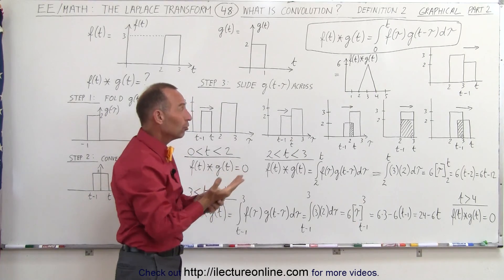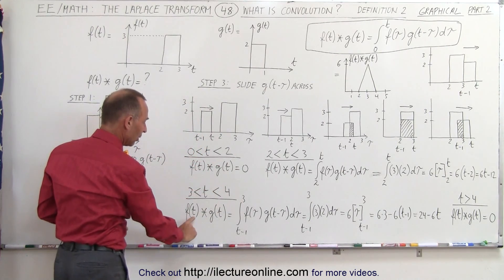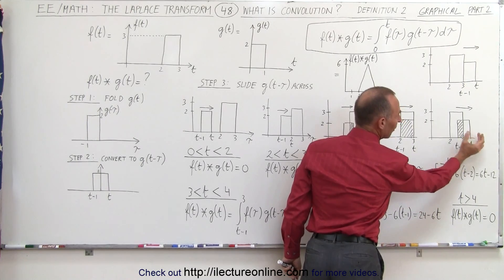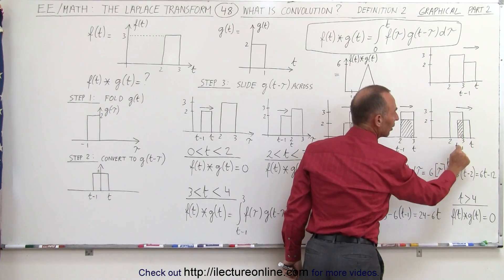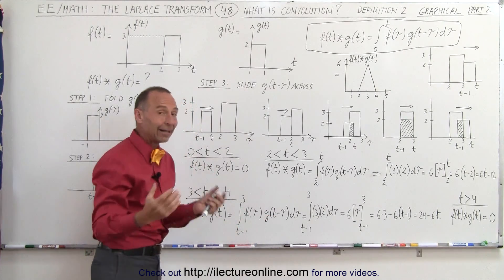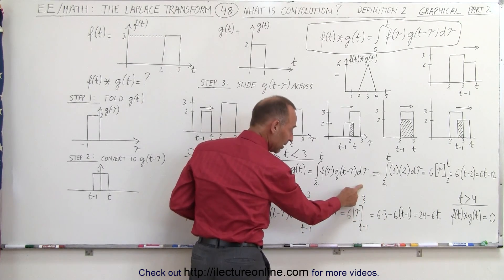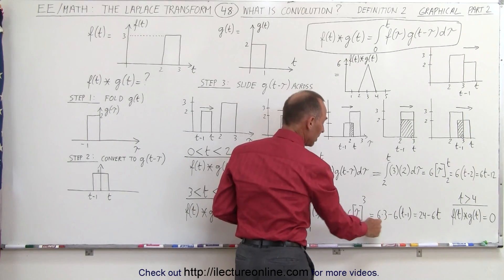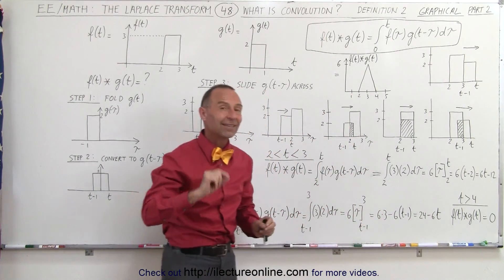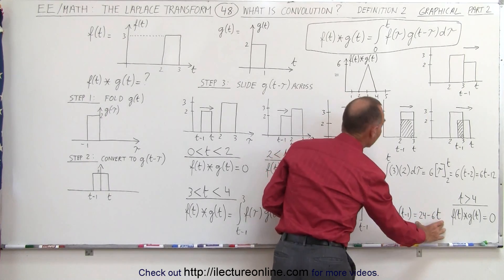Now we integrate using the definition of the convolution going from three to four. For f convolved with g in this region, the limits change: the back end of the sliding function is at t minus 1, and they stop overlapping at 3, so the limits are from t minus 1 to 3 of f(τ) times g(t − τ). Again the heights are 3 and 2 times dτ. Integrating gives 6 times τ from t minus 1 to 3, which yields 6 times 3 minus 6 times (t − 1), giving the equation 24 minus 6t — the exact same equation as in the previous video.